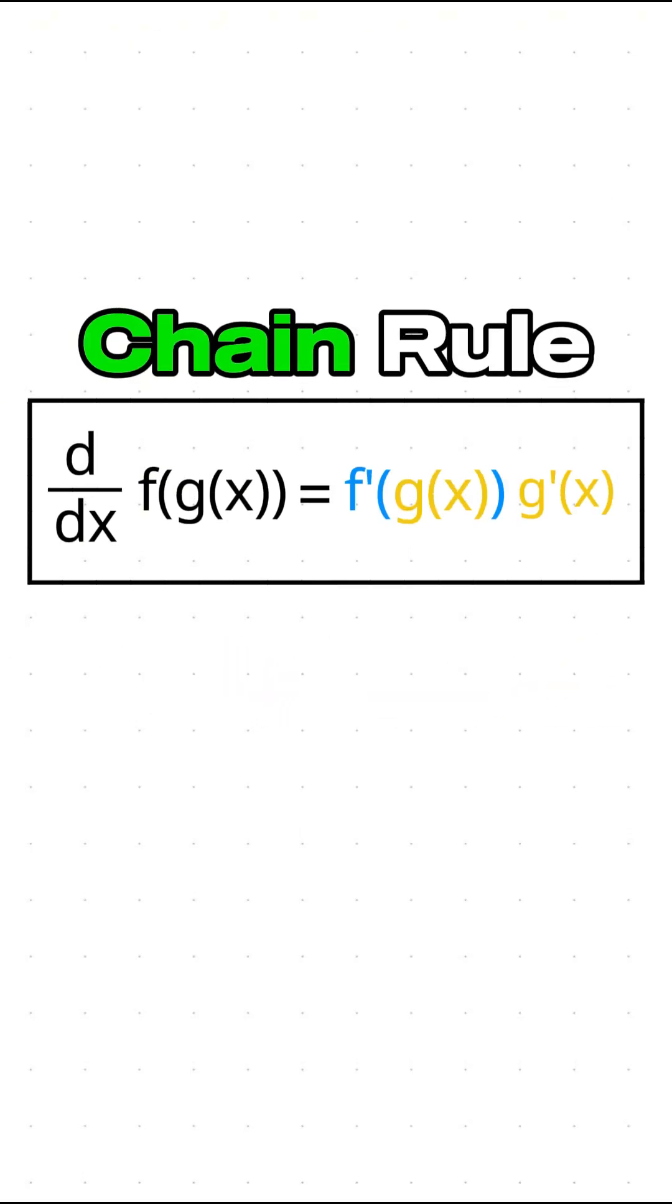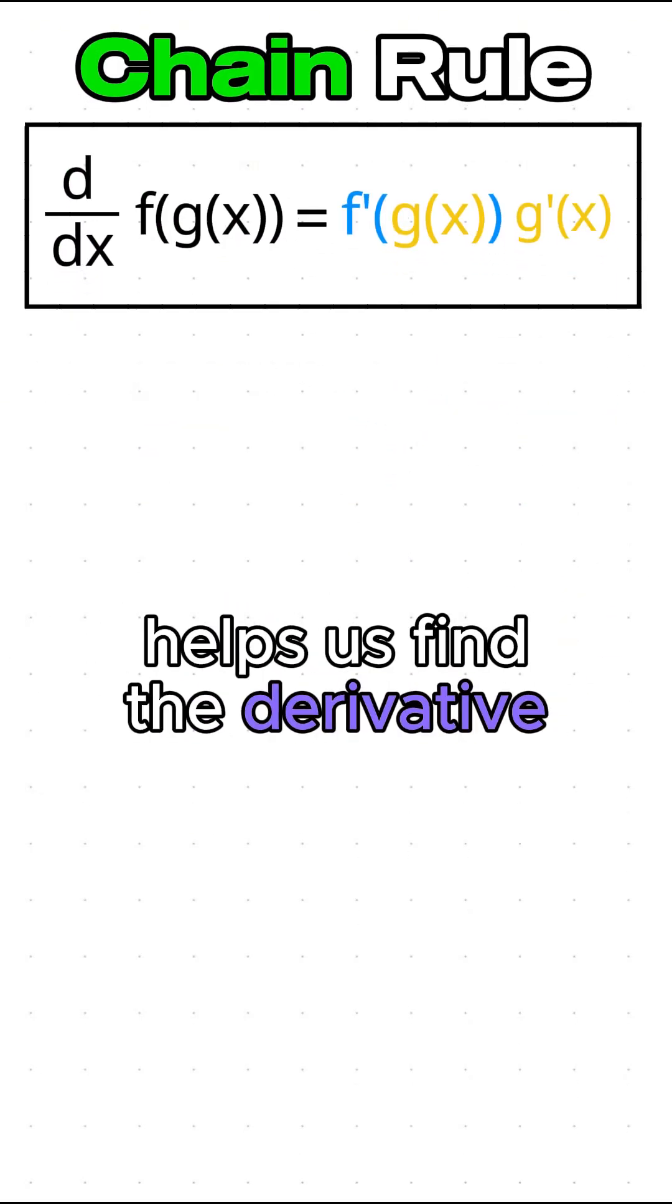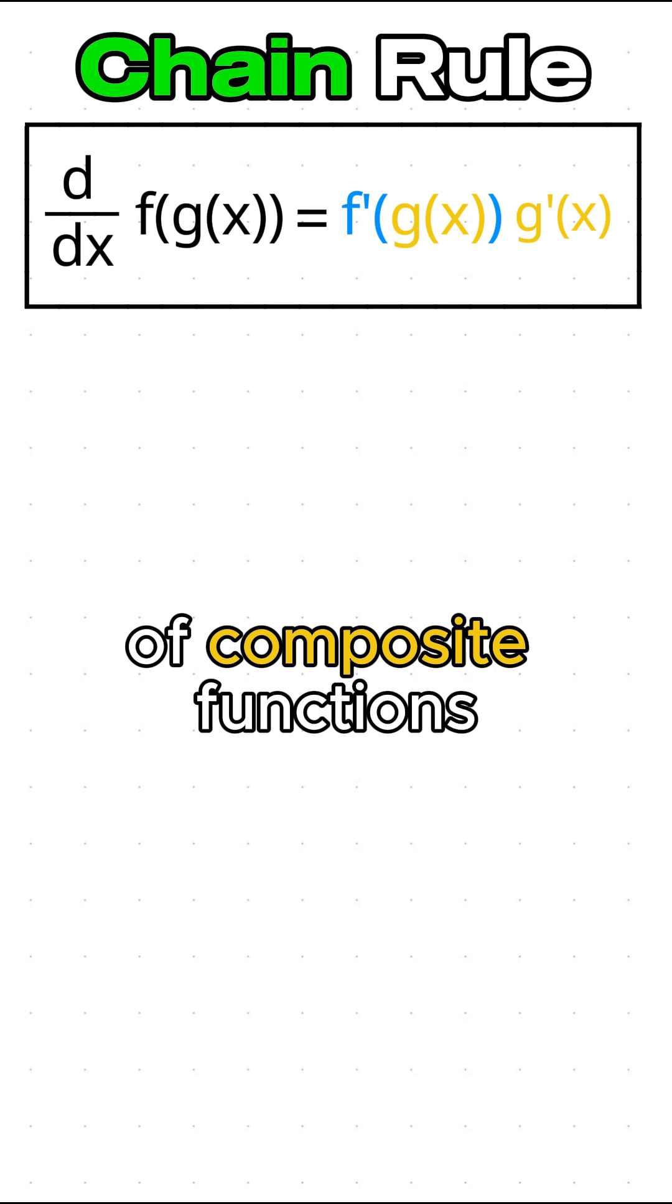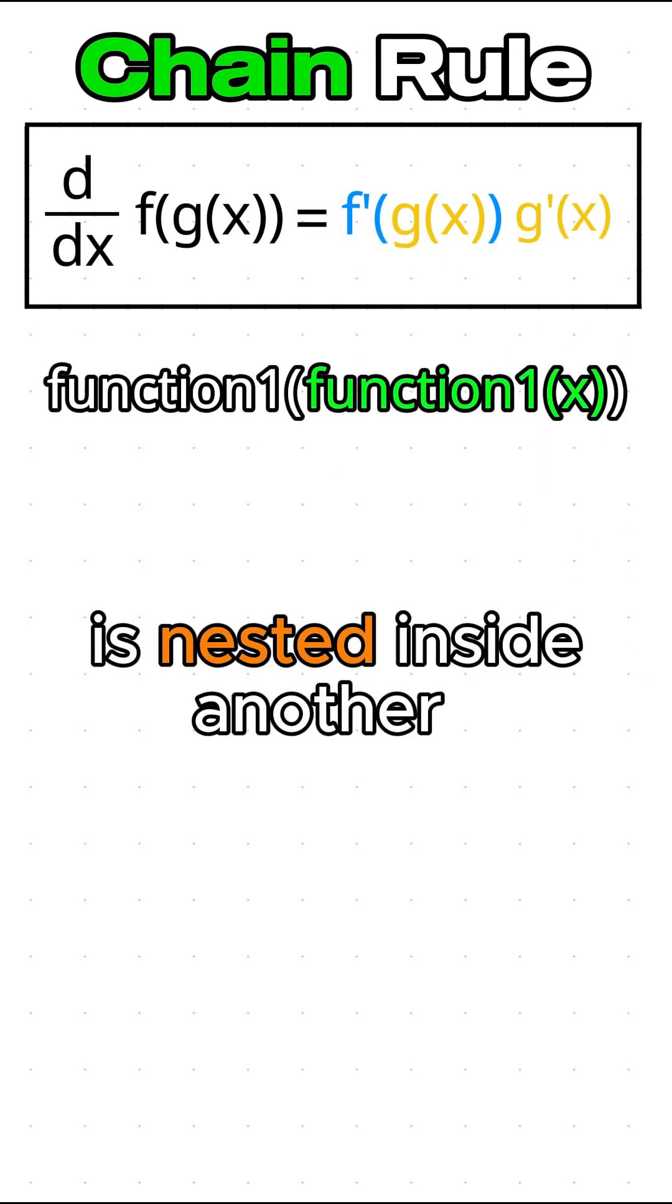This is the chain rule in calculus. The chain rule helps us find the derivative of composite functions, where one function is nested inside another.